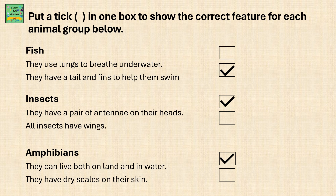Insects. They have a pair of antennae on their heads — that is true. All insects have wings — not true. Amphibians. They can live both on land and water — true. They have dry scales on their skin — that is not true.